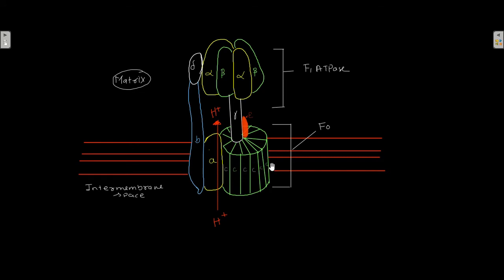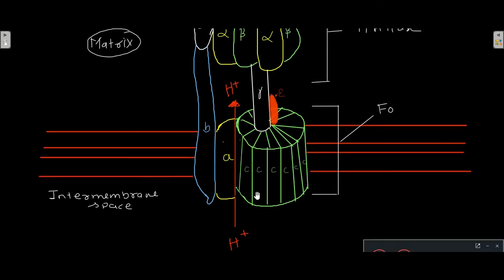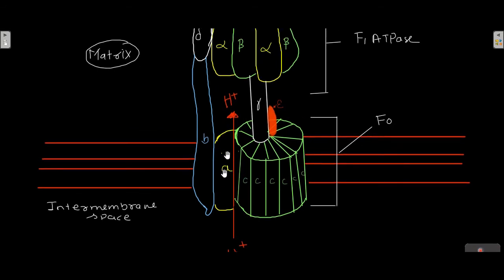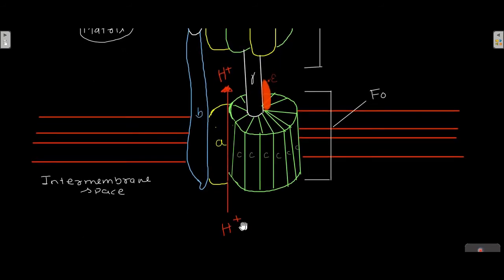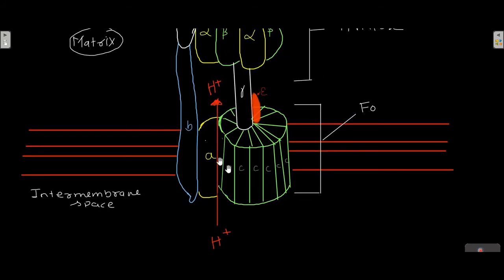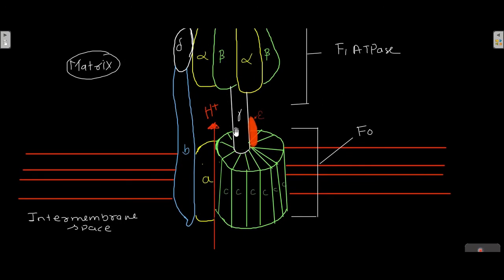Protons pass through the disk of C subunits of F0, and the movement of protons through the C subunit disk causes rotation of the gamma subunit, which is attached to the C subunits. Protons pass from the intermembrane space to the matrix through this disk of C subunits, and that causes the rotation of the gamma subunit.